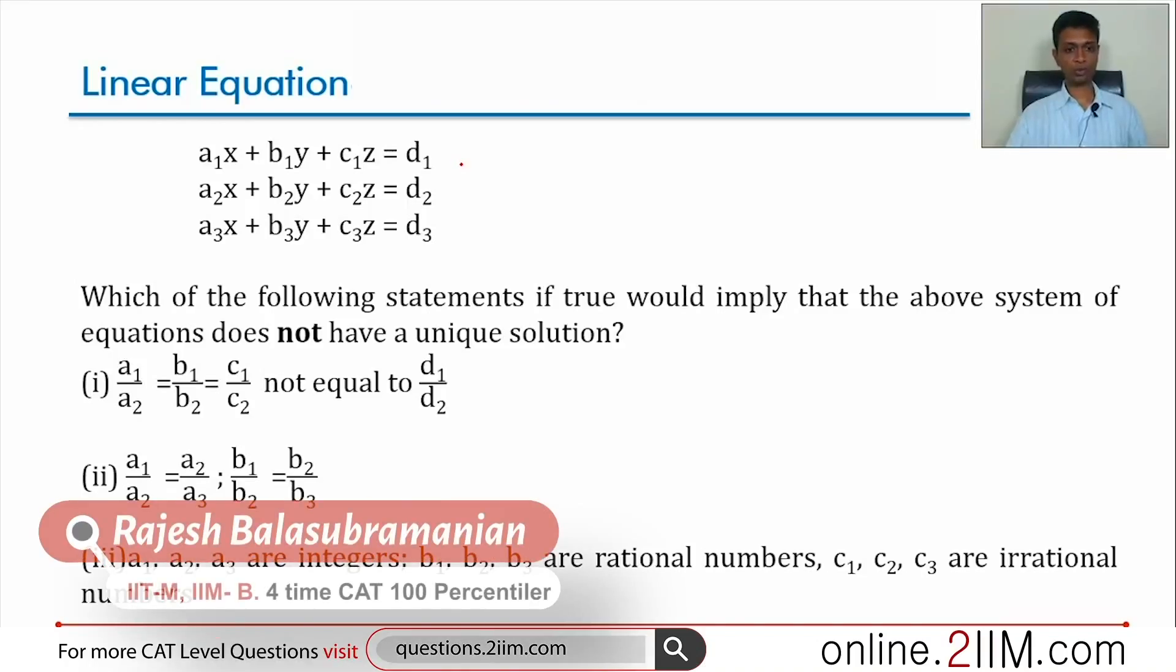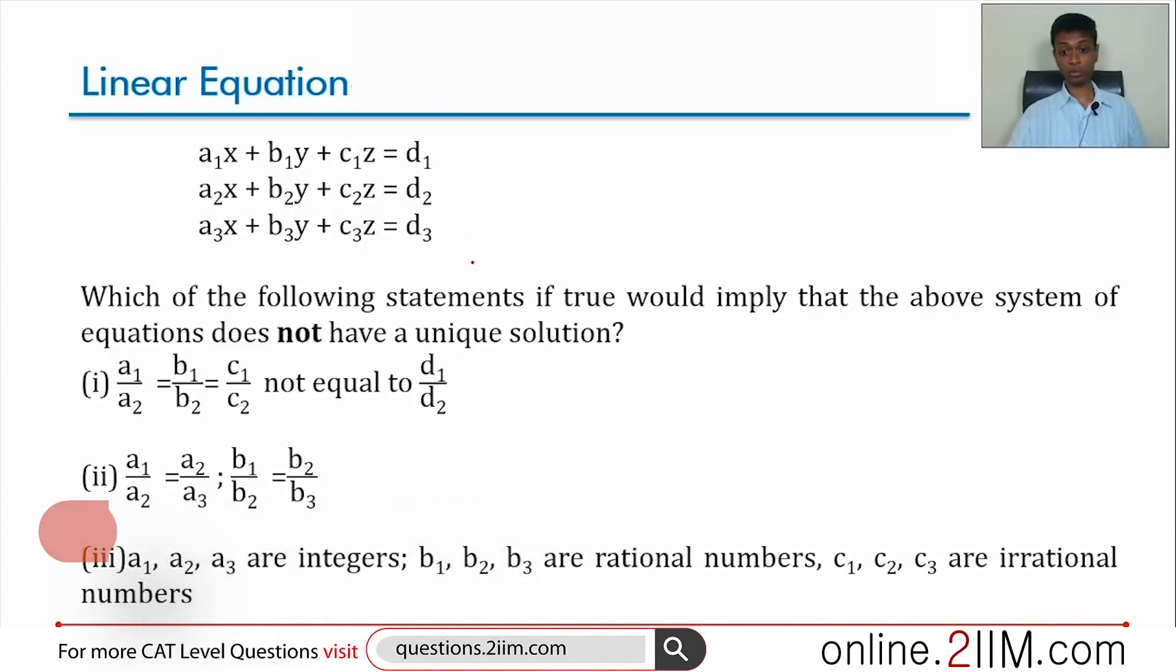To this one, a1x plus b1y plus c1z equal to d1, a2x plus b2y plus c2z equal to d2, similarly for d3. Which of the following statements if true would imply that the above system of equations does not have a unique solution?